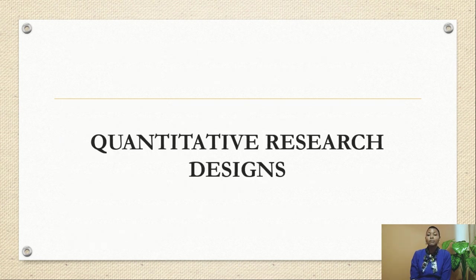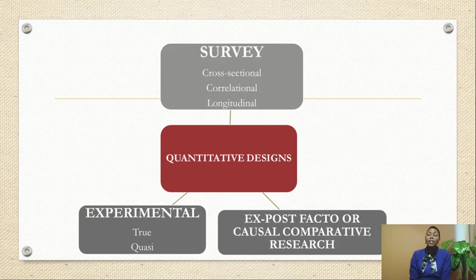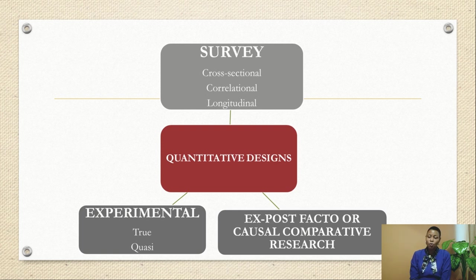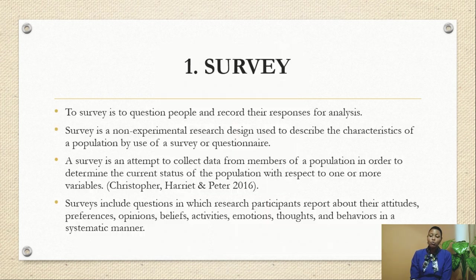Those factors and essential elements apply to all approaches. We now move to look at quantitative research designs. We have three main quantitative research designs. The first is survey, which can be cross-sectional, longitudinal, or correlational. The second is ex-post-facto or causal comparative research. The third is experimental, which is either true or quasi. Let us now discuss each of those designs.